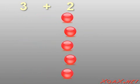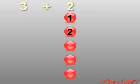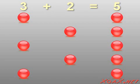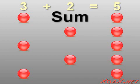Then we put them all in one group and count them all together. 1, 2, 3, 4, 5. This means that 3 plus 2 equals 5. We might also say that the sum of 3 and 2 is 5.